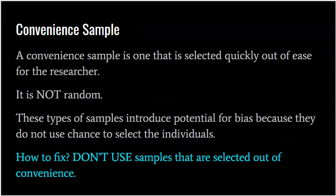Convenience sample bias is when a sample is selected quickly out of ease for the researcher. It is not random at all, and introduces potential for bias because it does not use chance to select individuals. For example, if I'm trying to get a sample of high school students and I just use my own 40 students, that's not random — that was just convenient. Or if I need to sample trees from a forest and I just grab the first 10 I come to, that's not random either. Those samples are not going to reflect the population.